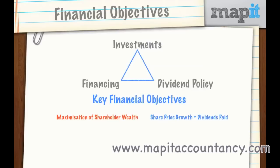That's the first and overriding financial objective. The next one is to increase profit — that goes without saying — but we need to be aware that profit can be manipulated. That's why when we come to investment appraisal, we will often look at cash flows rather than profit. Profit can be manipulated through accruals, prepayments, and provisions. Clever accountants are able to manipulate what the profit figure is, so we need to state that as a limitation when looking at an increase in profits.